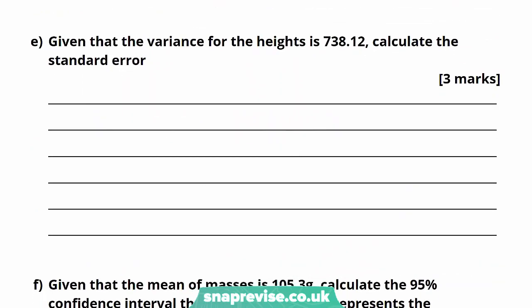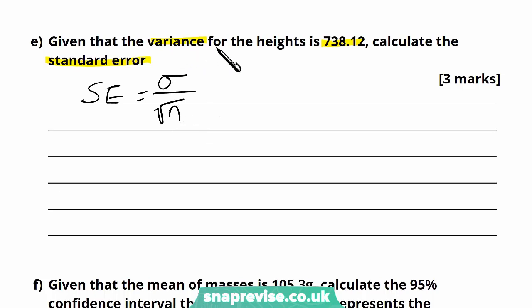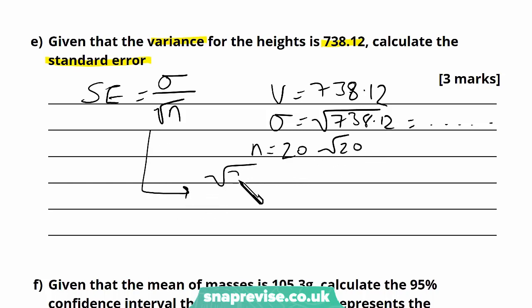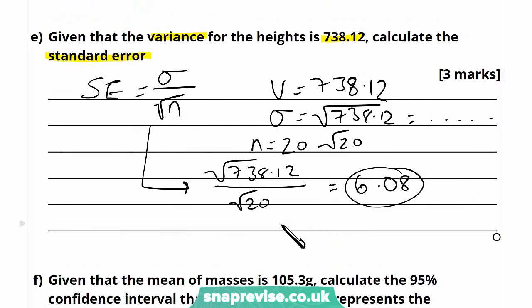The next question says: given that the variance for the heights is 738.12, calculate the standard error. The standard error equals standard deviation divided by the square root of n. We have the variance, not the standard deviation, so the standard deviation is the square root of 738.12. With n = 20, we calculate root 738.12 divided by root 20, which gives a rounded value of 6.08. The first mark recognises that you convert variance to standard deviation before plugging into the equation.